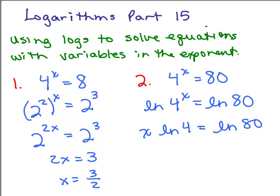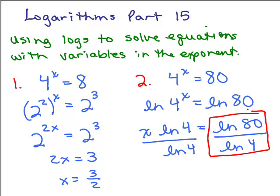Hopefully, this looks familiar to you from the last video. And now we could just divide both sides by the natural log of 4. So x is going to be equal to the natural log of 80 divided by the natural log of 4. So that's the exact answer right here. Now, if we want to approximate this to 4 decimal places, then what I need to do is use my calculator. So you have to take the natural log of 80 divided by the natural log of 4. Do not round until the end of the problem.